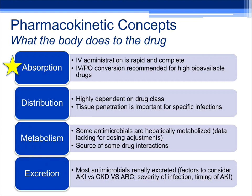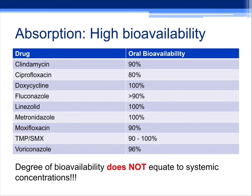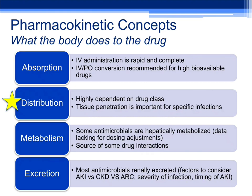Let's jump into pharmacokinetics — what the body does to the drug. First is absorption. IV is rapid and complete: 100% absorbed, no GI absorption issues. If your patient has some ischemia, you don't need to worry about oral absorption. We do have IV-to-PO conversions for high-bioavailability drugs, but the key takeaway is that high bioavailability does not equate to systemic concentrations. Oral amoxicillin absorbs very well but doesn't reliably get into the bloodstream for systemic infections. When you do IV-to-PO for Bactrim, you get good systemic concentrations, but doxycycline really likes to concentrate in the skin rather than blood.